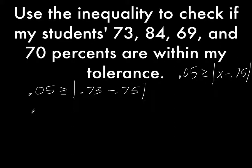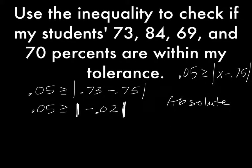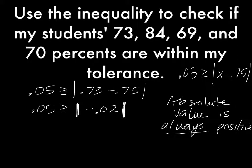Absolute value: 0.05 is greater than or equal to negative 0.02 absolute value. It's important to remember that once you get to just a number inside of your absolute value bars, that's when you do that it's always positive thing. Absolute value is always positive once you evaluate it. So this we would go to 0.05 is greater than or equal to positive 0.02. And is that true? Yes.